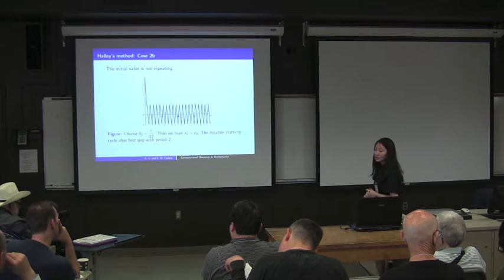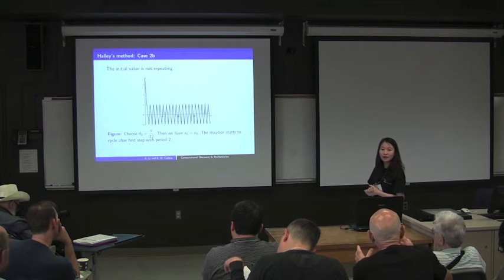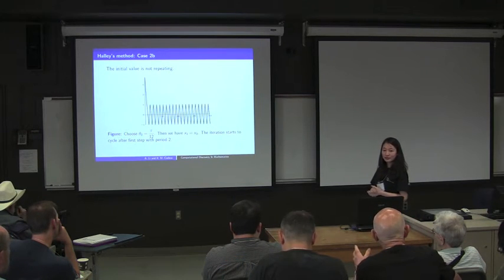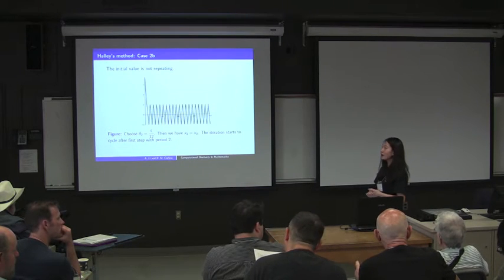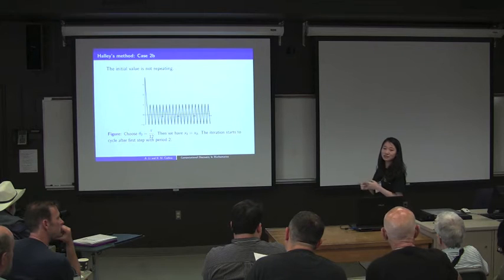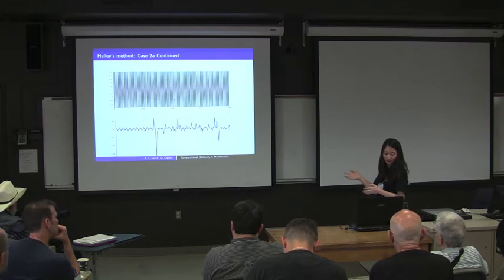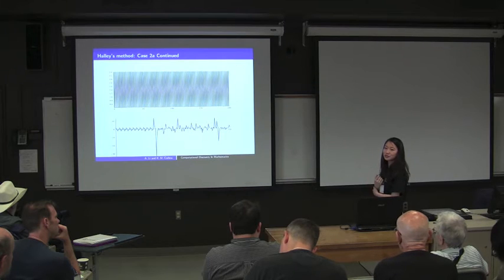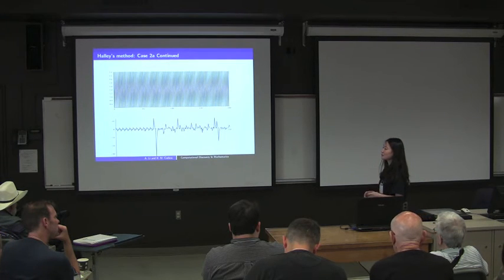In the case where the initial value is not the repeating part, here is one example. An audience member suggested using higher precision, such as 2000 digits. With 16 digits the periodicity is destroyed after only 5 periods; with 32 digits it lasts a little longer. With higher precision the result would be more accurate, but round-off error still exists.